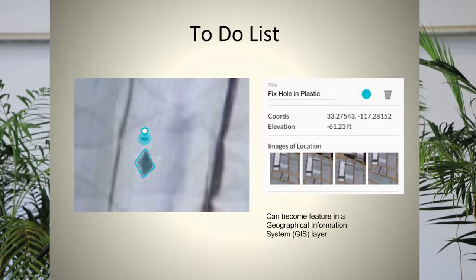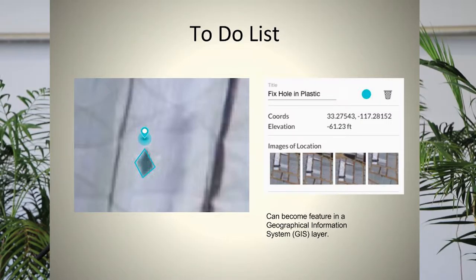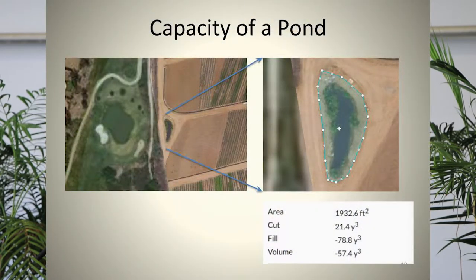Another feature I call a to-do list — you see something in the field and you can flag it. Someone asked if they could review their farm from their desk, and I said, why not from Hawaii? It produces an exact latitude and longitude that can be fed into a geographical information system. You can even pull up a specific image and start discussing your field at that visual level, integrating that data into a GIS.